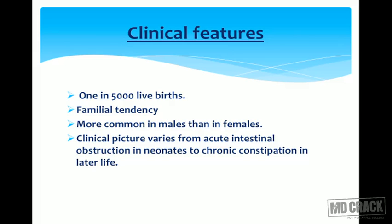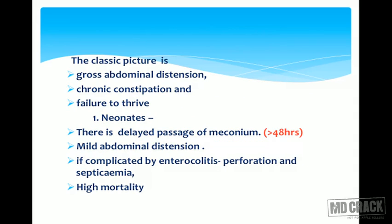Clinical features: incidence is 1 in 5000 live births, with a familial tendency and male predominance. The clinical picture varies from acute intestinal obstruction in neonates to chronic constipation in later life. The classic picture is gross abdominal distention, chronic constipation, and failure to thrive. In neonates, there is delayed passage of meconium for more than 48 hours, mild abdominal distention, and if complicated by enterocolitis, possible perforation and septicemia — with high mortality.